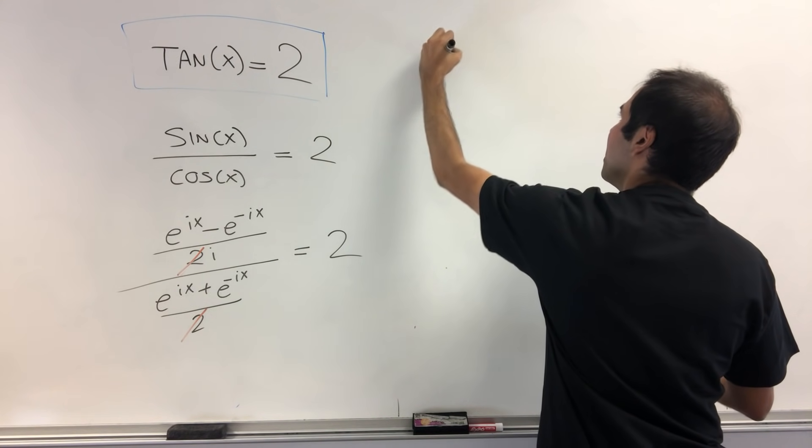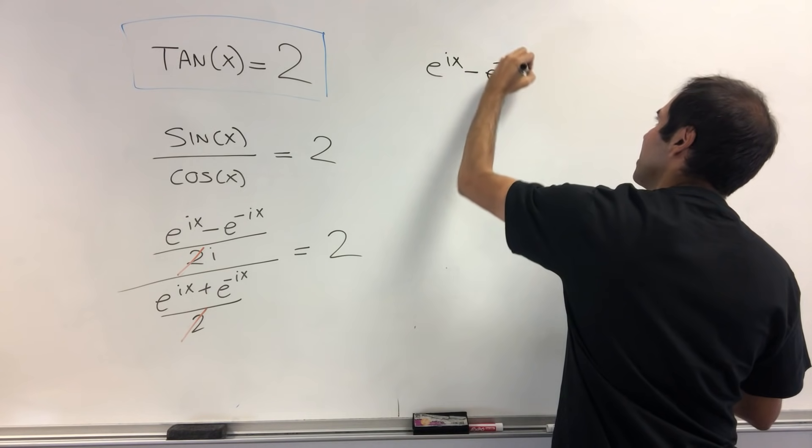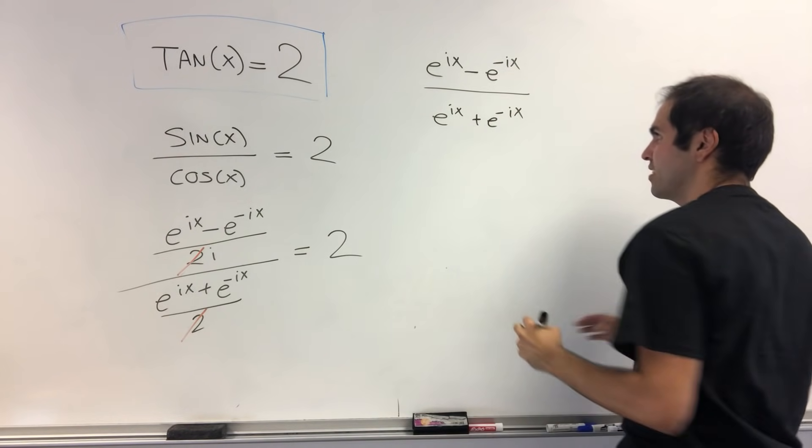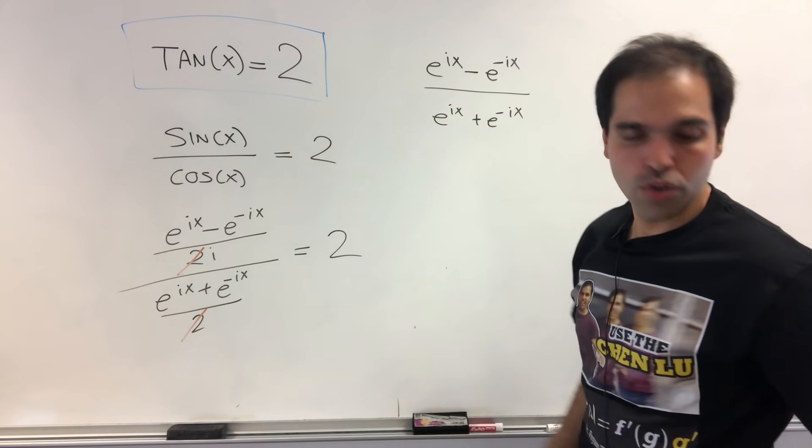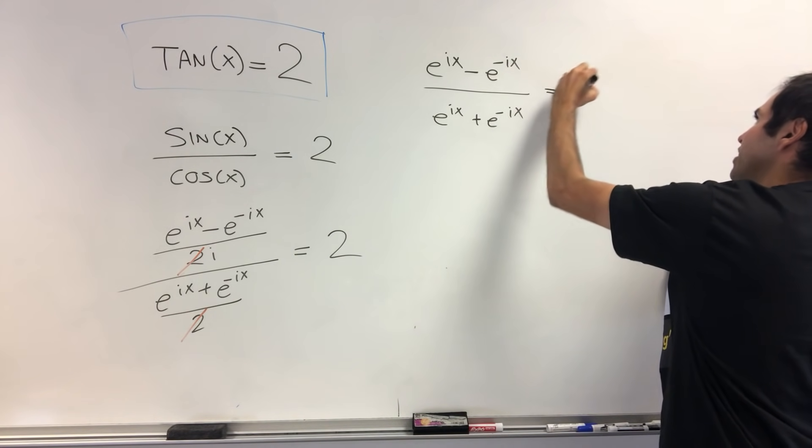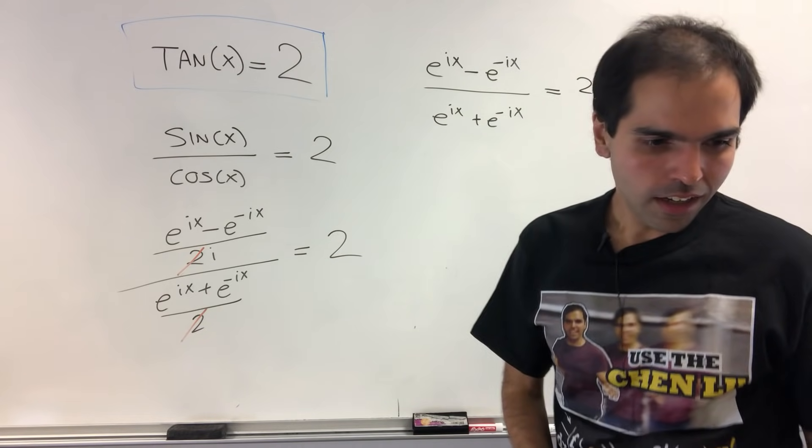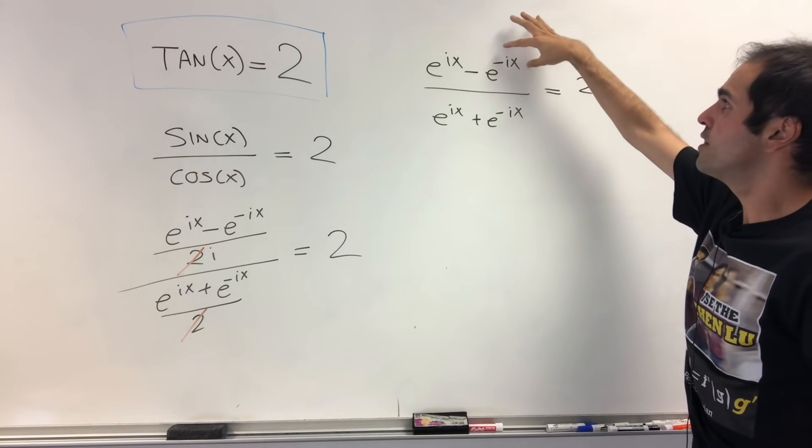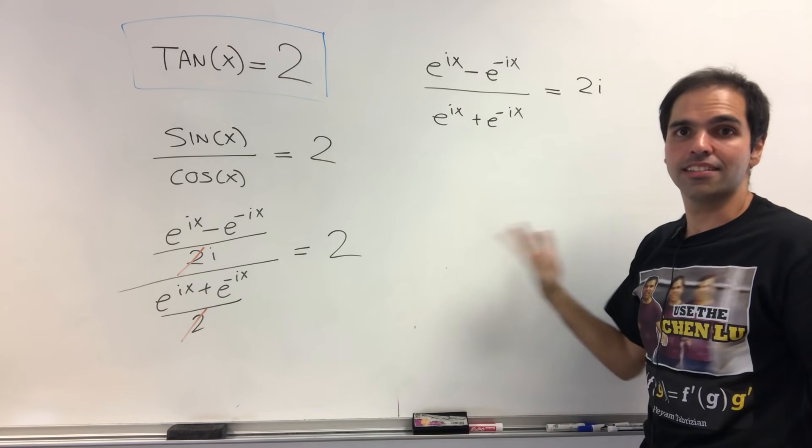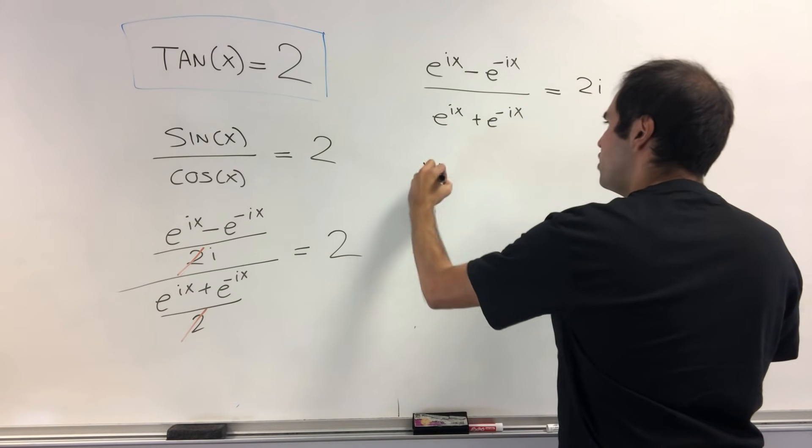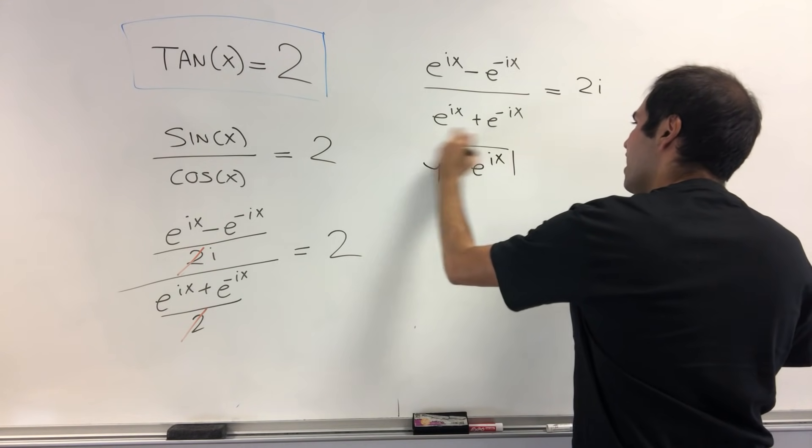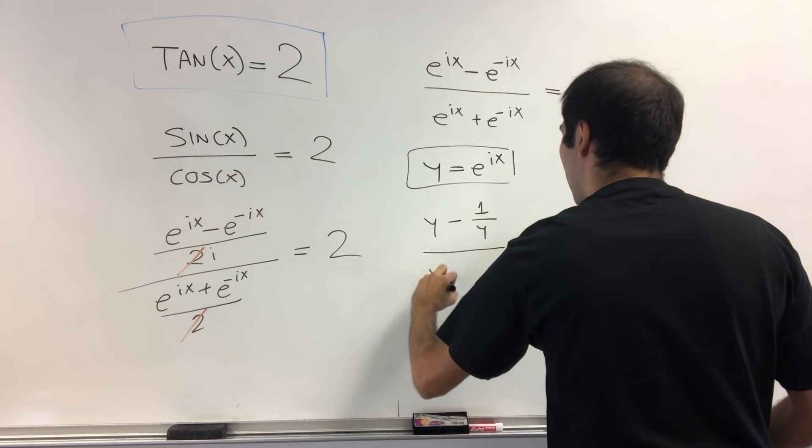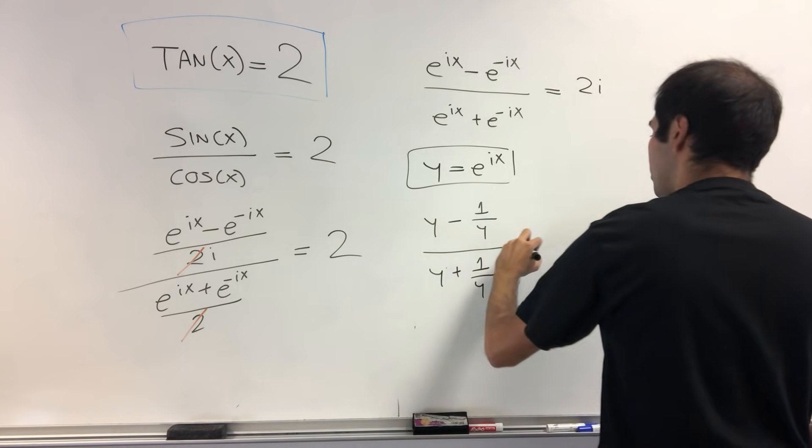And then what you get is e to the ix minus e to the minus ix over e to the ix plus e to the minus ix over i equals 2, but just putting the i on the right side, we get 2i. All right, this is already very good, but we can simplify this further, because this is 1 over that. So e to the minus ix is 1 over e to the ix. So if you let y to be e to the ix, then what we get is y minus 1 over y over y plus 1 over y equals 2i.